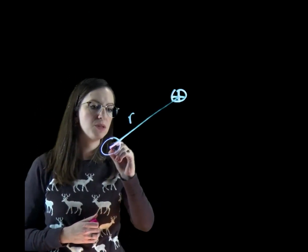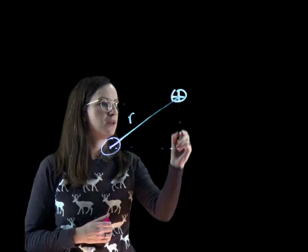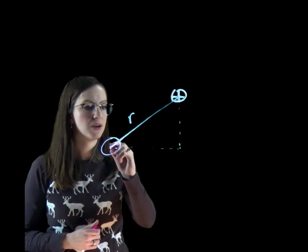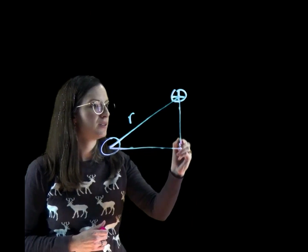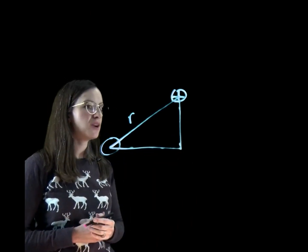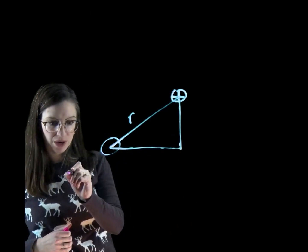So we want to use Pythagorean's Theorem and build a triangle there. Let's actually make that solid. So we have our triangle here, and I'm going to go ahead and draw my axes.